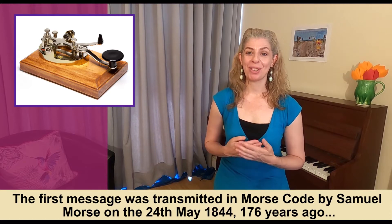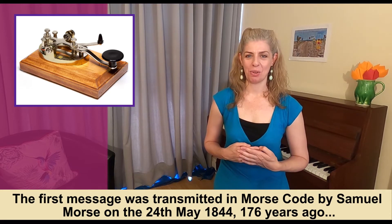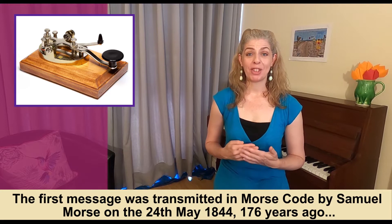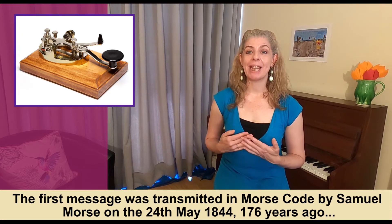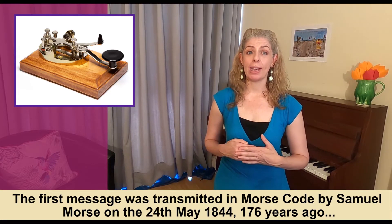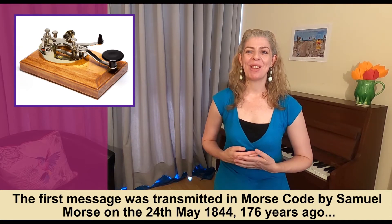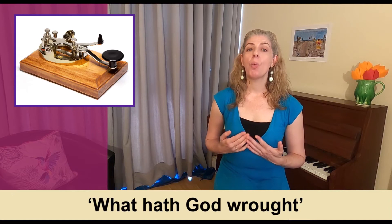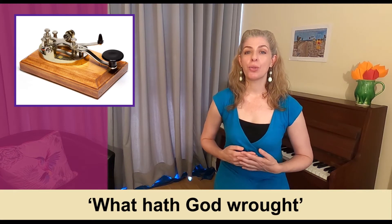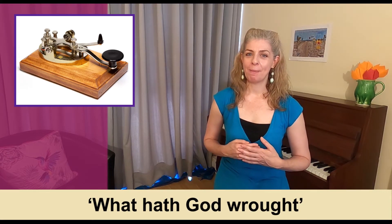Before Morse code, messages were still handwritten and often delivered on horseback. Messages were sent and received by sending pulses down electrified wires using an international code. The first message went from Washington to Baltimore and it read: 'What hath God wrought?' — which is a line from Numbers in the Bible.